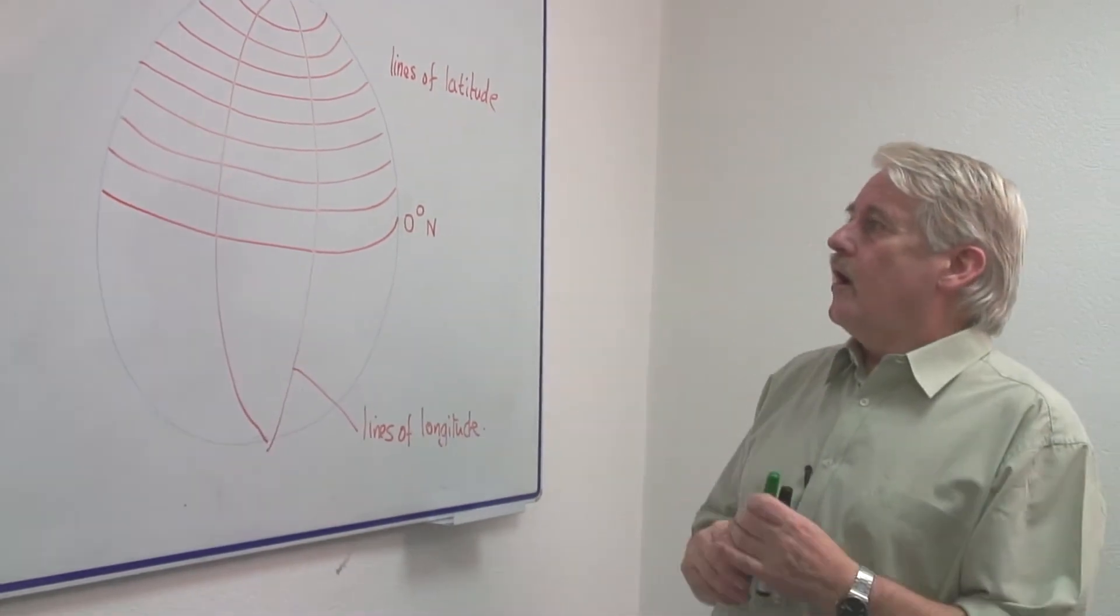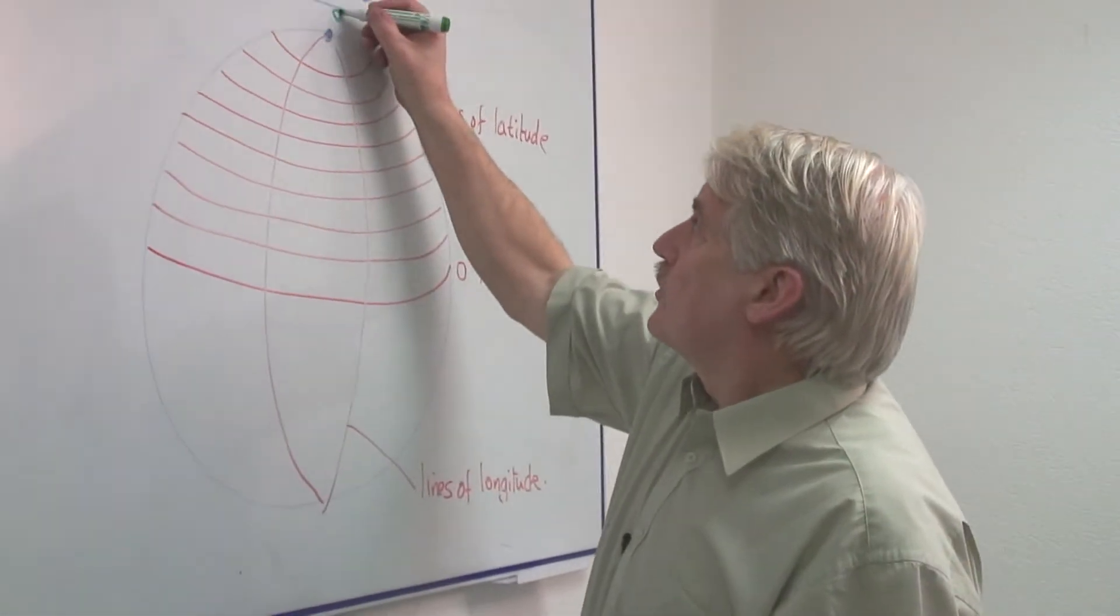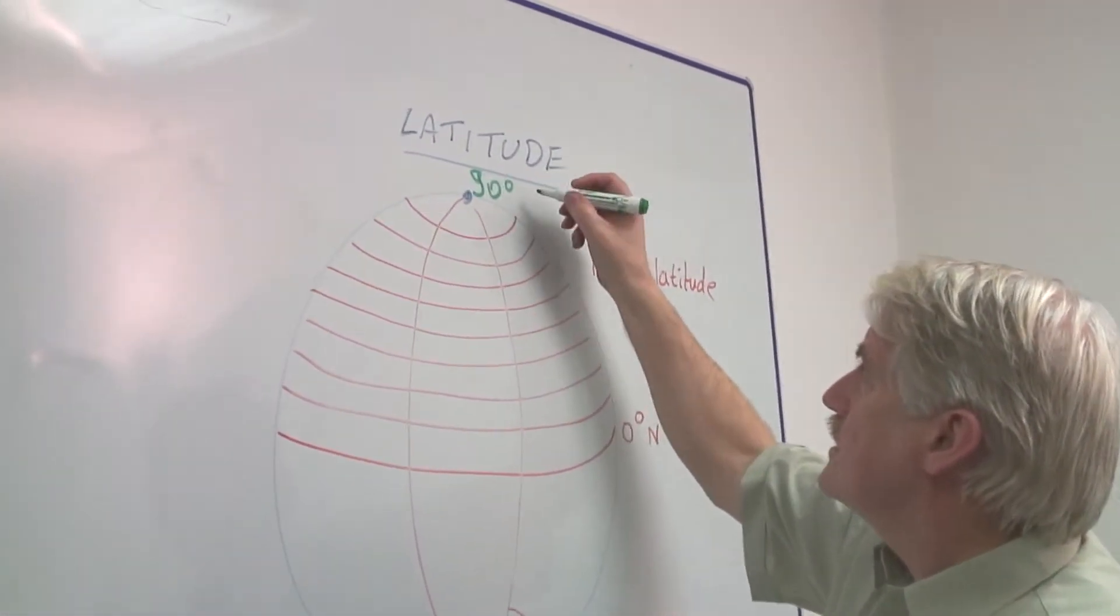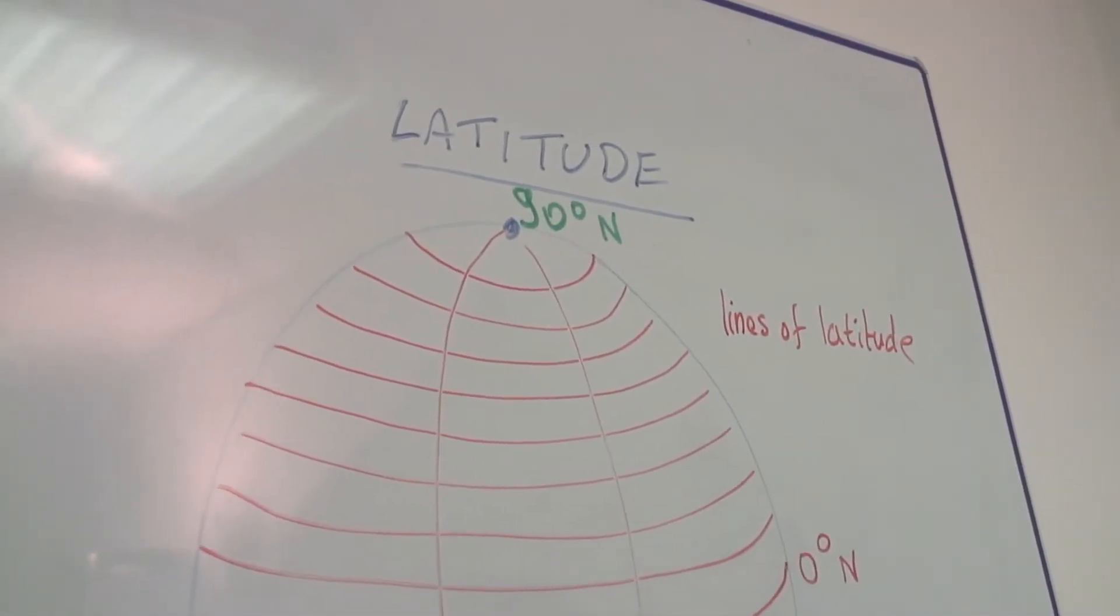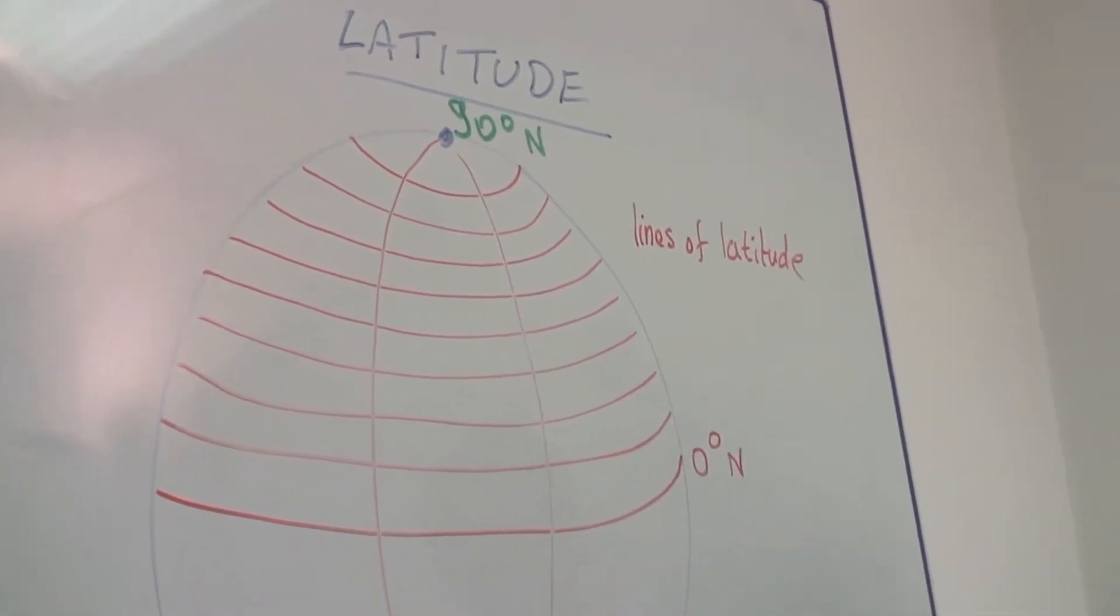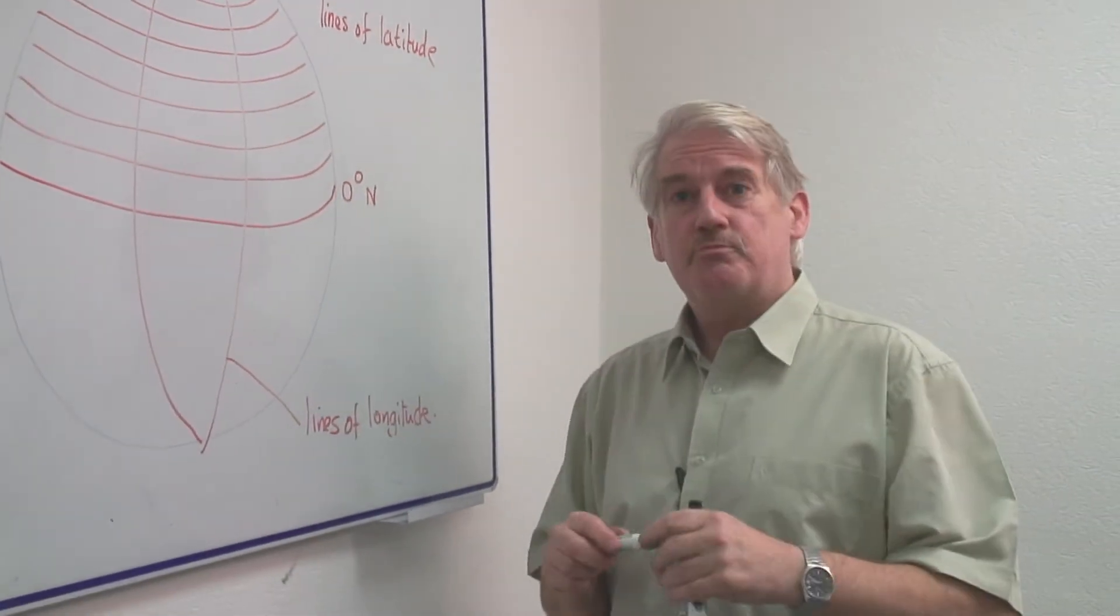Now obviously we start at zero degrees north, and in fact the north pole is 90 degrees north. And that is the north pole. It is not a circle, it is a point. In fact it's the only point on earth, it has some very strange properties.